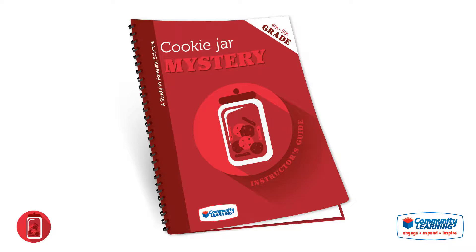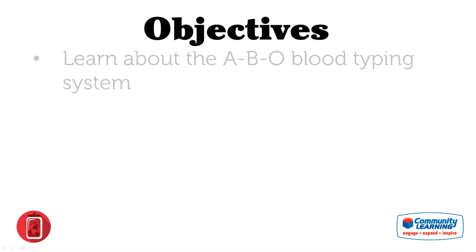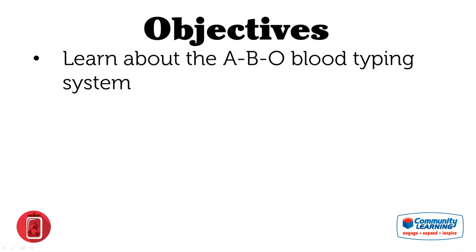Before beginning, get familiar with all the materials you will use in this activity. In this lesson, students will learn about the ABO blood type system, the four main blood groups, and the eight blood types associated with it.